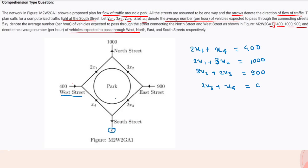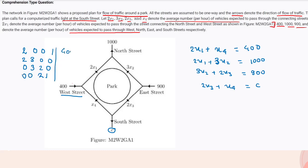Now let me write this in matrix form. The coefficient matrix has rows: [2, 0, 0, 1], [2, 3, 0, 0], [0, 3, 2, 0], and [0, 0, 2, 1], applied to the vector [x1, x2, x3, x4], giving the right-hand side values 400, 1000, 900, and c.